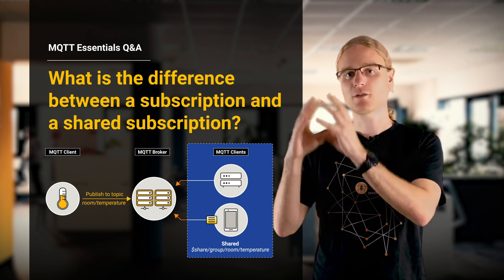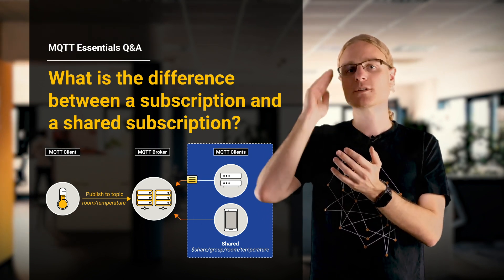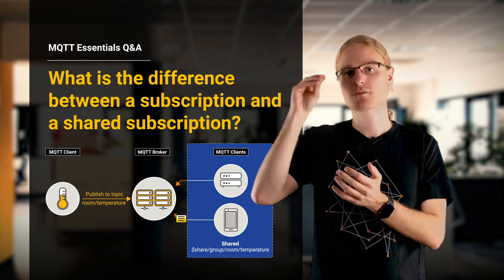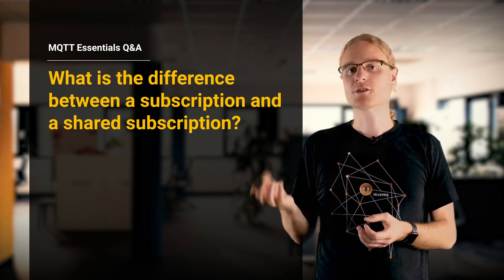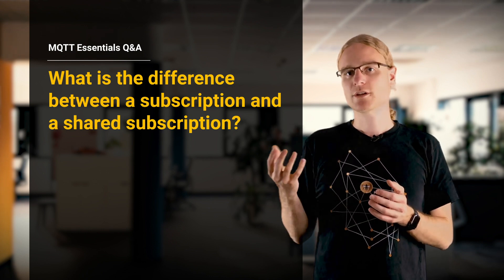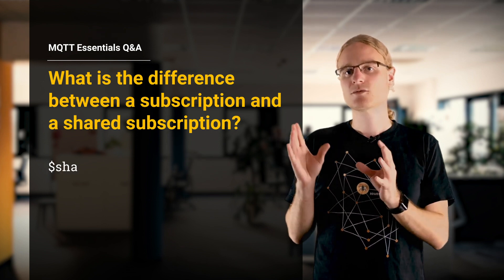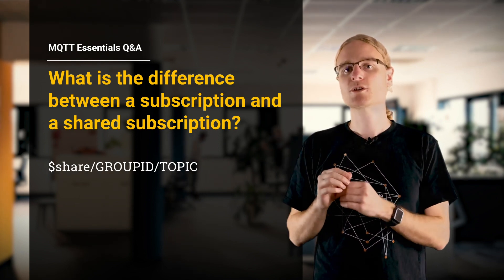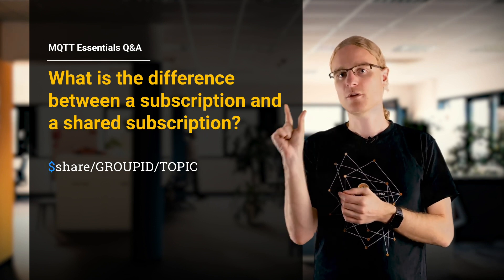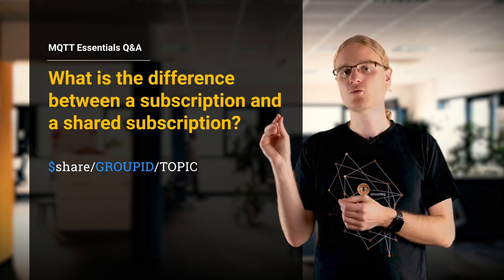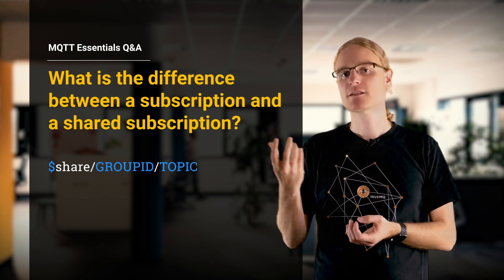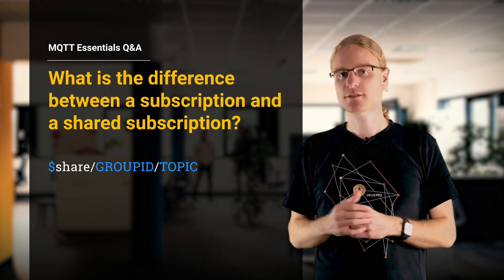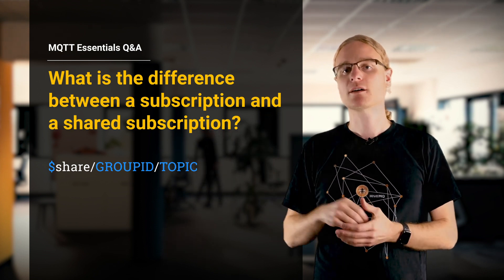Multiple clients can form a logical shared subscription, and the broker will distribute the data for that specific subscription to all clients which are part of the shared subscription. Clients can join and go out of the shared subscription at runtime, and this is very easy. In order to join a shared subscription, a client needs to use a specific topic, which you can see here, which consists of three parts: the dollar part in the beginning, then the group ID, and then the actual subscription. All clients which use this magic string for subscribing are joining the shared subscription, and so you can distribute data across all these clients.